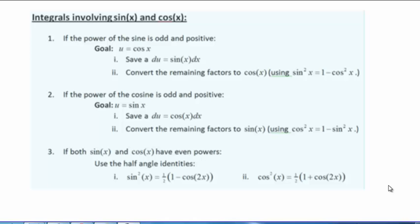If the power of cosine is odd and positive, then our goal is to use the u substitution u equals sine of x. We want to save a du equals cosine of x dx and convert the remaining factors to sine of x using cosine squared of x equals one minus sine squared of x.